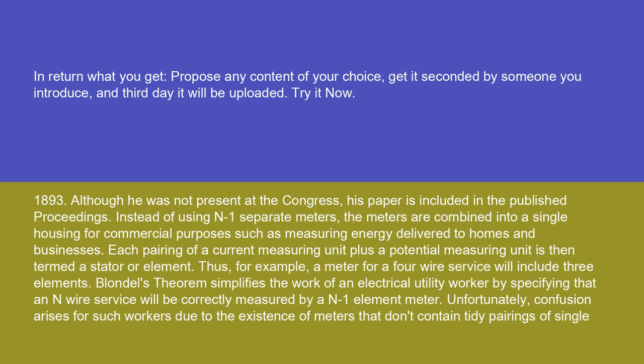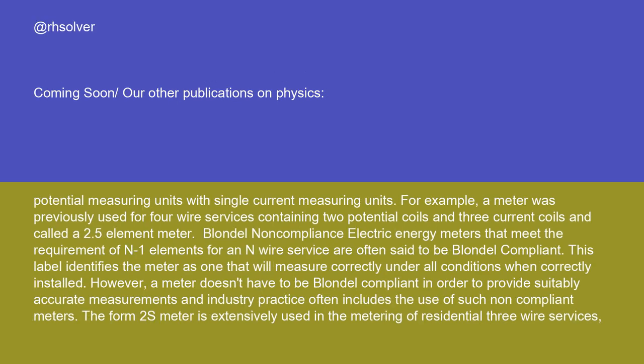Unfortunately, confusion arises for such workers due to the existence of meters that don't contain tidy pairings of single potential measuring units with single current measuring units. For example, a meter was previously used for four-wire services containing two potential coils and three current coils, called a 2.5-element meter. Meters that meet the requirement of N-minus-one elements for an N-wire service are often said to be Blondel compliant.